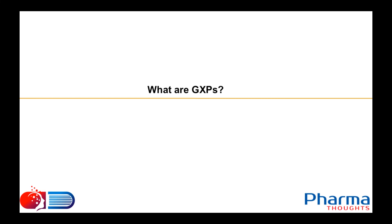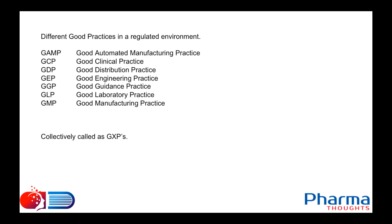You might have seen the term GXPs in some articles or websites. The pharma industry is a highly regulated environment with different areas operating under different regulations, each with established good practices. These include Good Clinical Practices for clinical studies, Good Laboratory Practices for non-clinical studies, Good Manufacturing Practices for manufacturing, GAMP (Good Automated Manufacturing Practice), GDP (Good Distribution Practice), GEP (Good Engineering Practice), and GGP (Good Guidance Practice). All these good practices collectively are called GXPs — used when referring to common areas with a common practice applicable across multiple subjects.